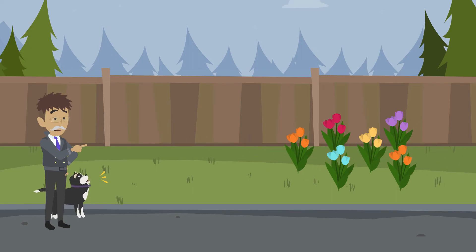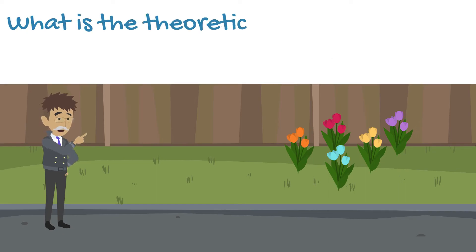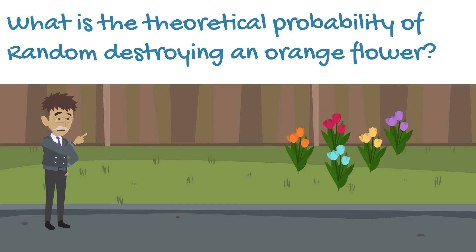A cat gracefully runs among a group of six flowers. Random bulldozes through one of the flowers. What is the theoretical probability that she destroys an orange flower if there are two?